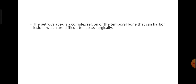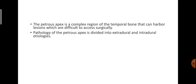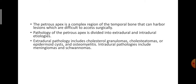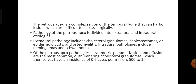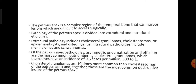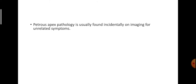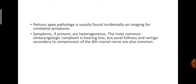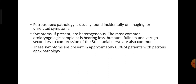The petrous apex is a complex region of the temporal bone, difficult to access surgically. Pathology is divided into extradural and intradural etiologies. Extradural pathology includes cholesterol granuloma, cholesteatoma or epidermoid cysts, and osteomyelitis. Intradural pathologies include meningiomas and schwannomas. Among petrous apex pathologies, asymmetric pneumatization and effusion are the most common, outnumbering cholesterol granulomas which have an incidence of 0.6 per million. Cholesterol granulomas are 10 times more common than cholesteatomas and together are the most common destructive lesions of the petrous apex. Petrous apex pathology is usually found incidentally, with symptoms present in approximately 65% of patients; the most common complaint is hearing loss.